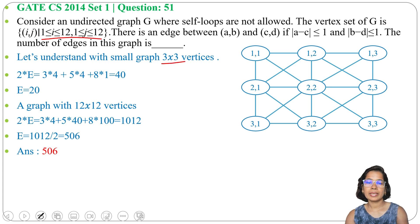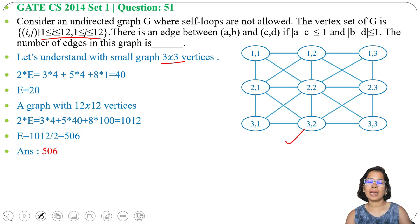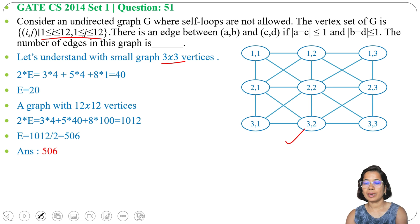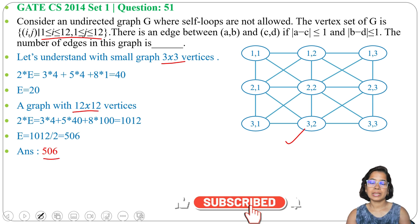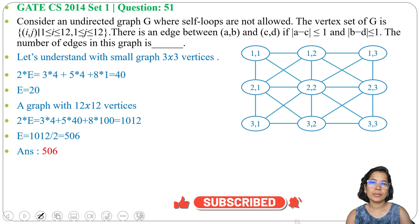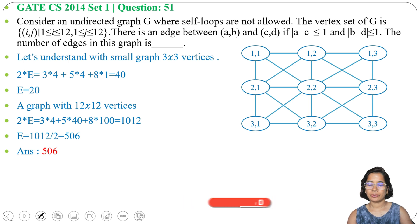We could not solve directly for 12 by 12, so we used the small 3×3 example to understand the structure, then generalized to 12×12. The final answer is 506 edges. If this lecture is helpful, please like, share, and subscribe. Thank you.